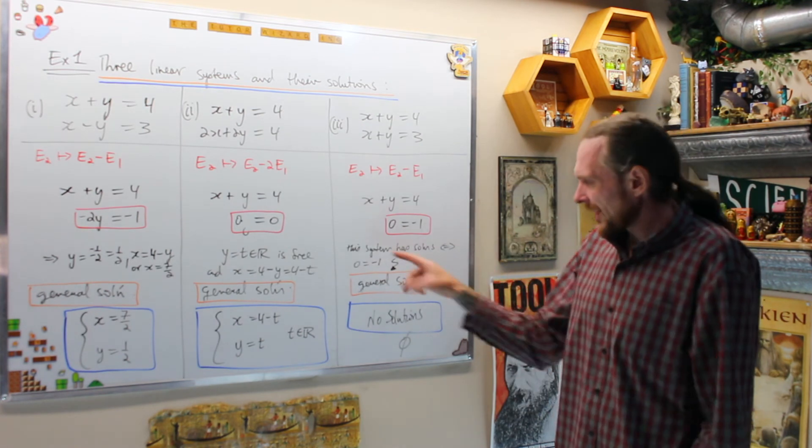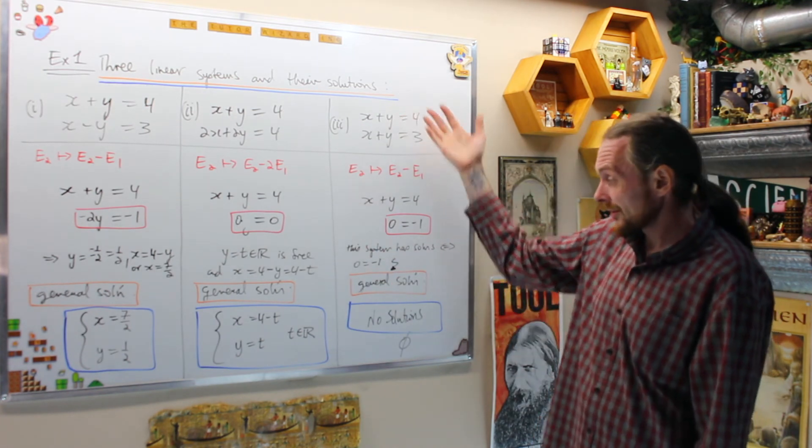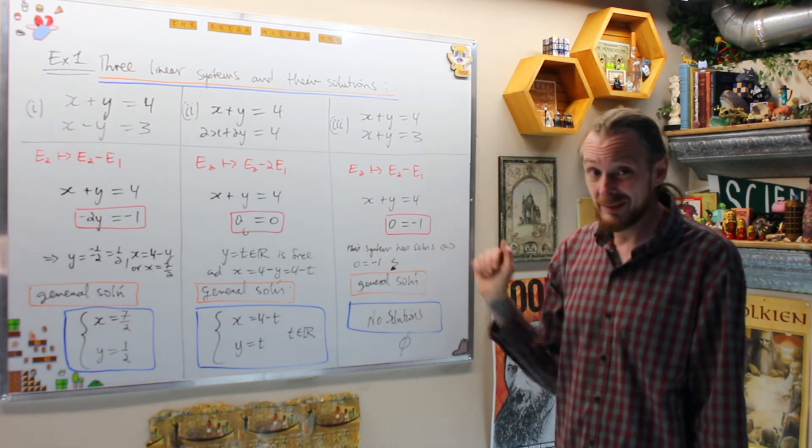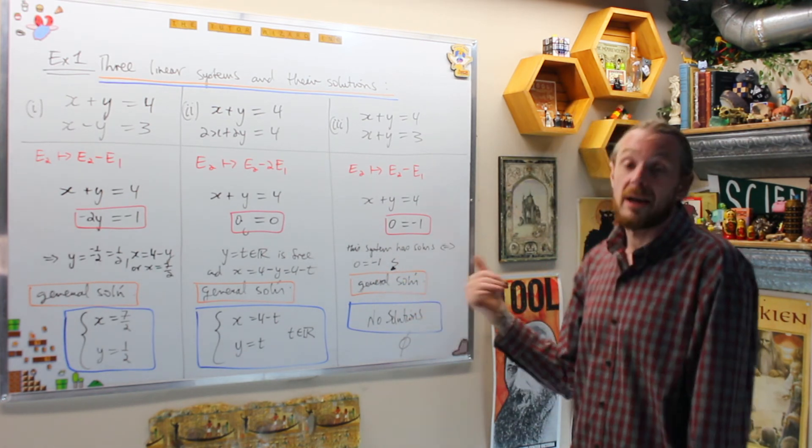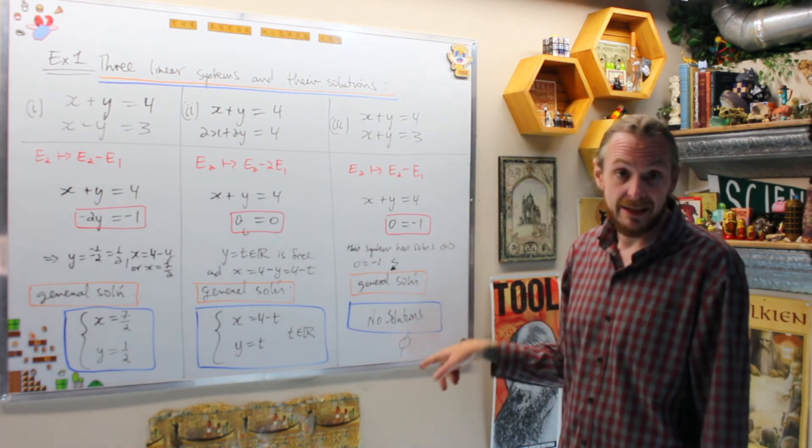And what that really tells us this time is our system has solutions if and only if zero equals one. And this is bad, so we can conclude that our general solution is actually the empty set, or we say no solutions.